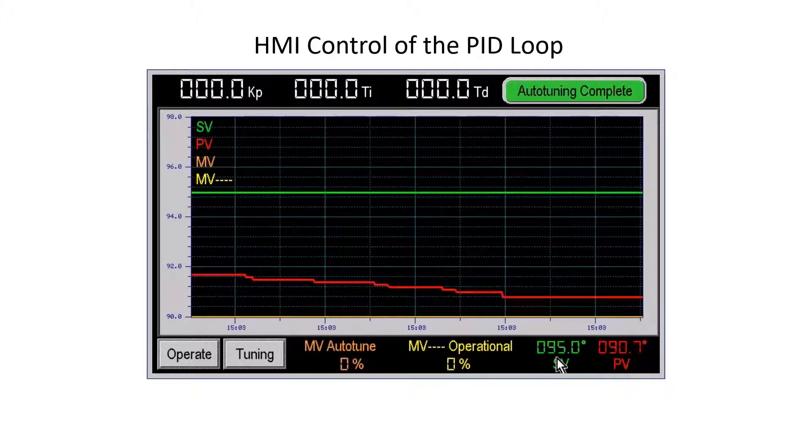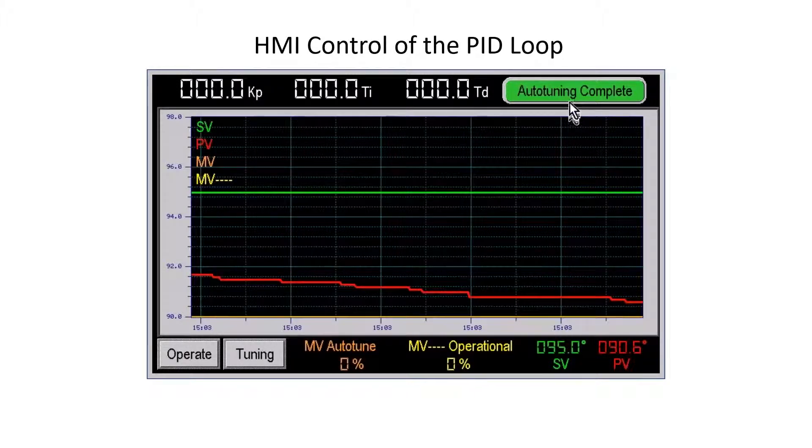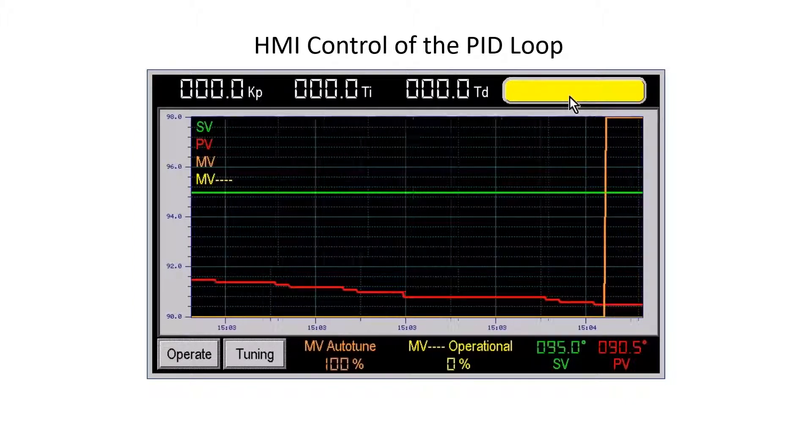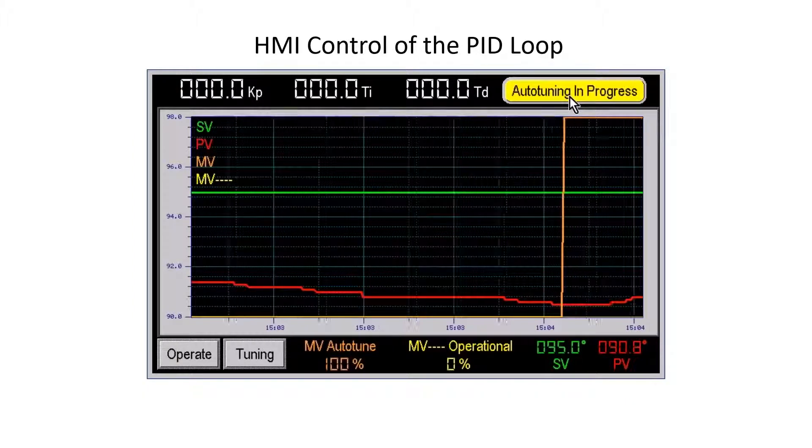Select a tuning SV near the normal operating value. In this case, 95 degrees. If the auto-tune button displays auto-tuning complete, the PID loop is ready for auto-tuning. Press the auto-tuning button to start the auto-tune routine.